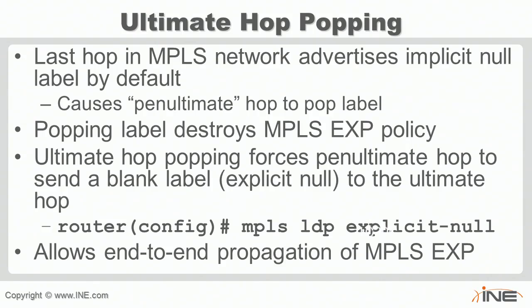From an implementation point of view, the examples will focus on how to handle classifiers: how does penultimate versus ultimate hop popping affect end-to-end markings, and how does doing classification in the IP-to-MPLS, MPLS-to-MPLS, or MPLS-to-IP portions of the network affect the configuration and overall logic of the QoS design? Some standardization documents for layer 3 VPN break these design goals into two models: the uniform model and the pipe model.